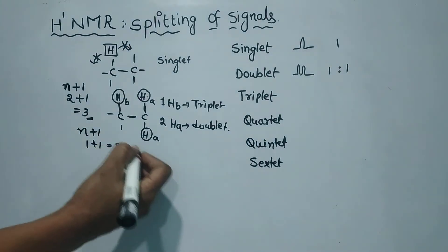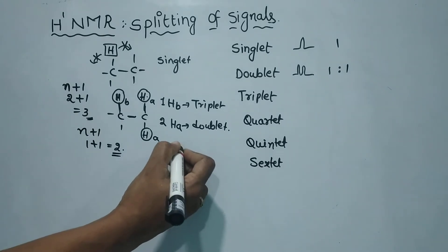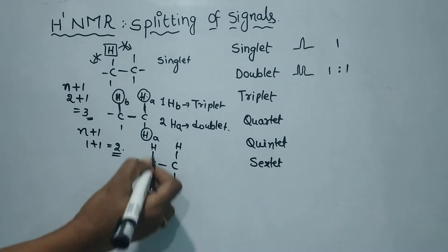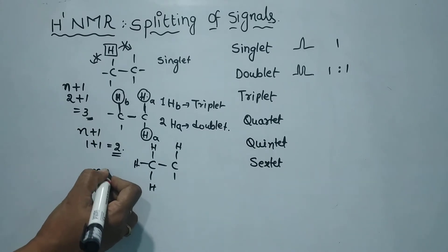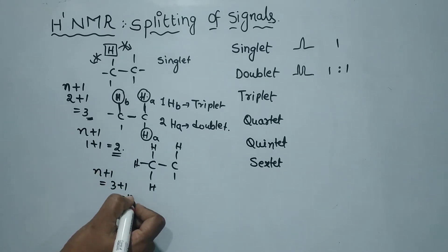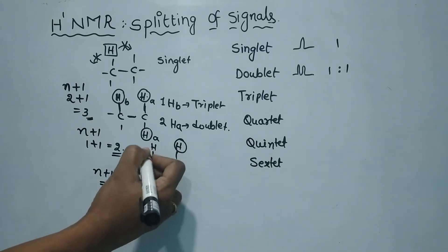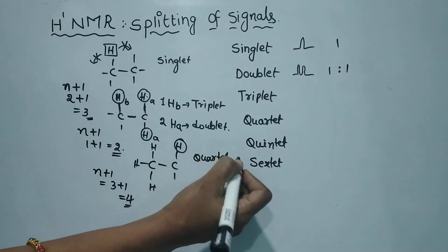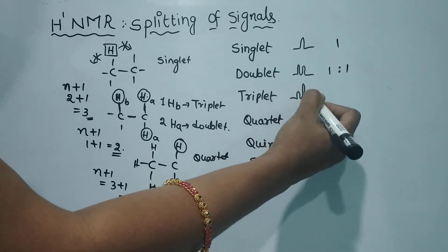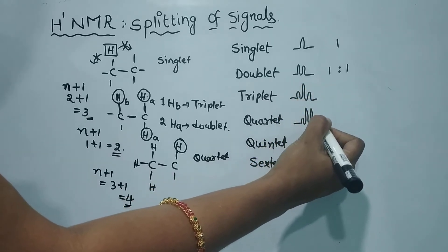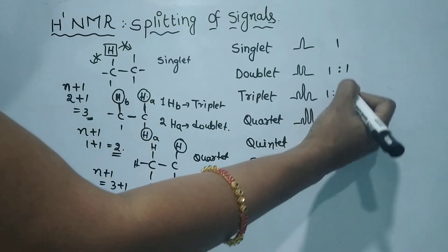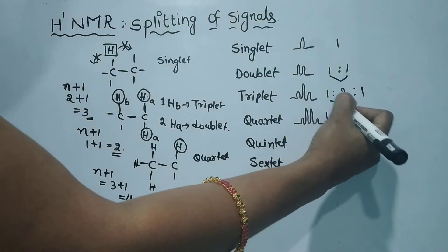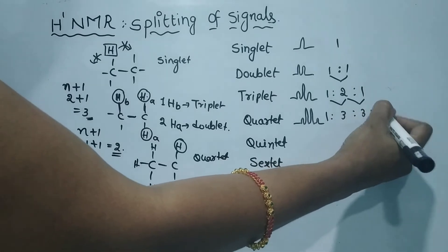Next, the adjacent carbon atom has 3 hydrogens. So, 3 plus 1 equals 4 — this hydrogen gives a quartet. The triplet corresponds to this signal and the quartet corresponds to this signal, with a 1:3:3:1 ratio.